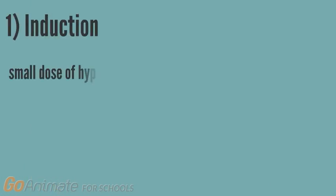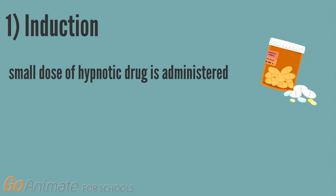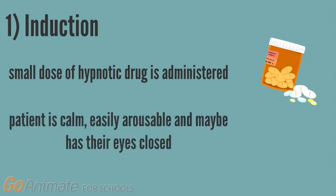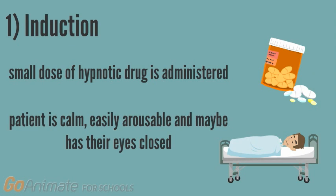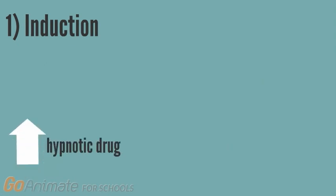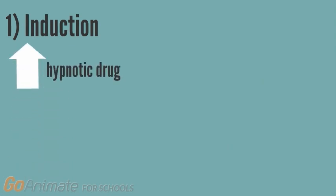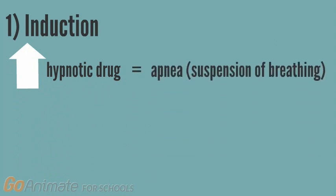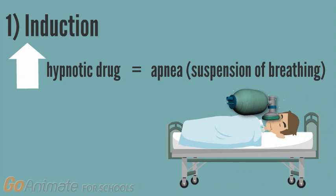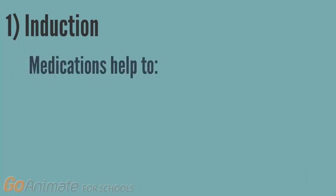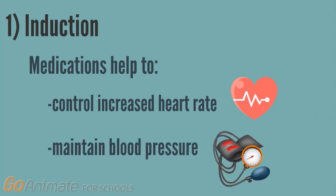During induction, a small dose of hypnotic drug is administered — for example, propofol. This induces a state of sedation in which the patient is calm and easily arousable, and may have their eyes closed. As more of the hypnotic agent is administered, an increasingly irregular respiratory pattern develops that progresses to apnea, at which bag mask ventilation is needed to support breathing. Medications are used to control increased heart rate and maintain blood pressure during this stage.